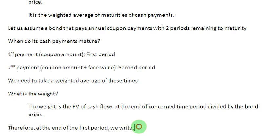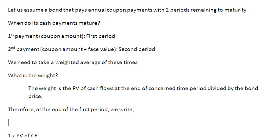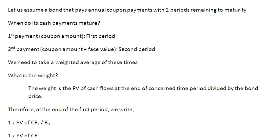So at the end of the first period, what we can do is write our term as 1, signifying the end of the first time period, and we need to multiply this by the present value of the cash flow. I am using the letters CF for cash flow and in the subscript I am writing the digit 1 to signify that this is the cash flow occurring at the end of time period 1, and then divide this by the price of the bond B0. That is the term for the first period.